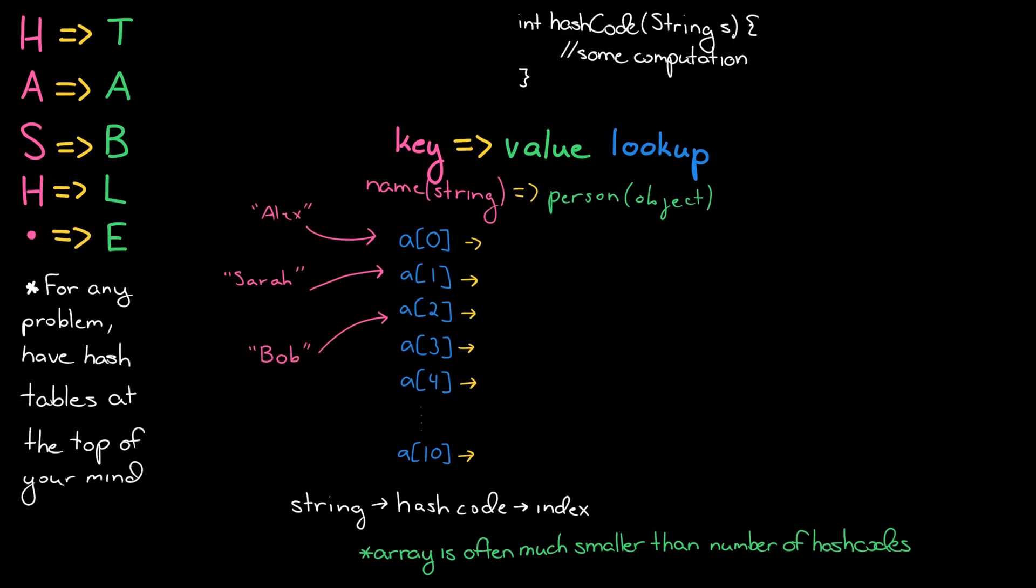Now note here that two different strings could actually have the same hash code. And that's because there are an infinite number of strings out there but a finite number of hash codes. So it's theoretically possible for Alex and Sarah to actually have the same hash code. Additionally since we're remapping the hash code into an even smaller index, two things with different hash codes could actually wind up mapped to the same index. So what do we do when this happens, which is called the collision.